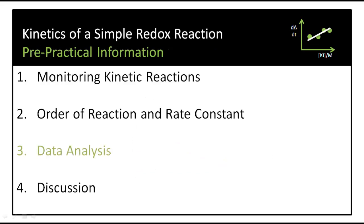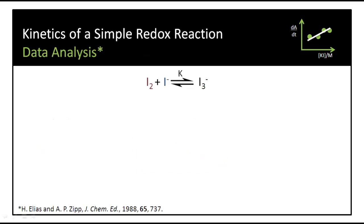In terms of the actual data we get from the experiment, we have to remember that this experiment is based on this original equilibrium. Because there is some iodine absorbing at 353, we need to take that into account and correct our data.